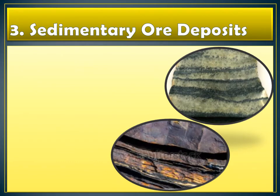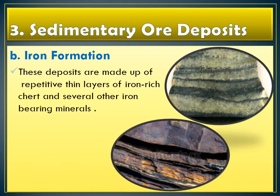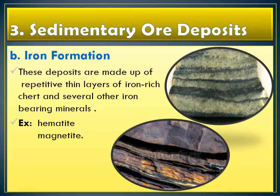Another example under sedimentary ore deposits includes iron formation deposits — minerals made of iron. These deposits are made of repetitive thin layers of iron-rich chert and several iron-bearing minerals, such as hematite and magnetite. The iron formations appear to be of evaporite-type deposits and are mostly formed in basins within continental crust. Since iron is a heavy metal, they tend to be cemented or deposited in the lower part of the basin or the crust.